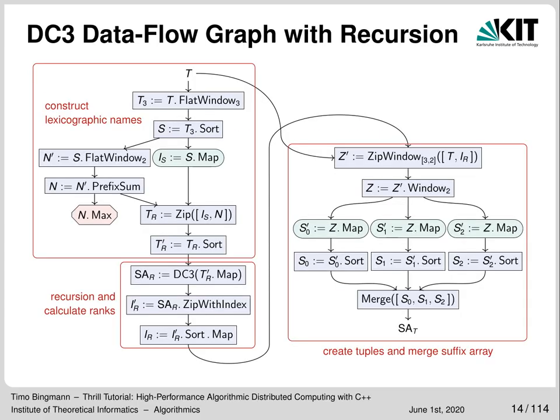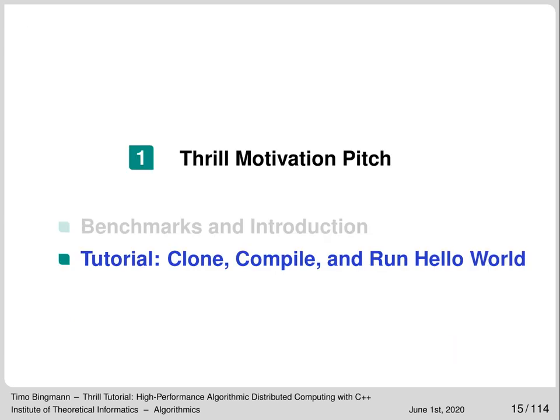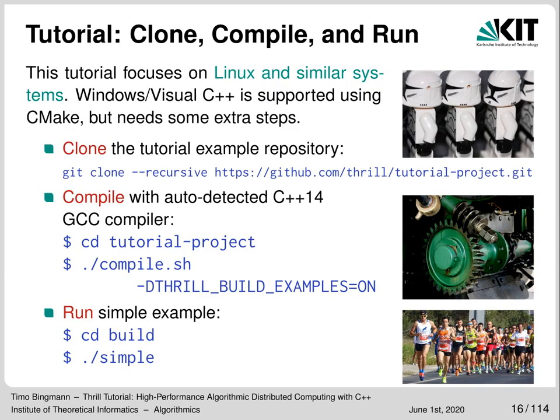Here is a diagram of the suffix sorting algorithm. It is just supposed to demonstrate that even complex algorithms can be composed from these primitives — it contains 21 operations and is recursive. Let me now show you a live demonstration of Thrill: cloning a simple hello world repository containing Thrill as a git submodule, compiling it with CMake, and then running the simple example program.